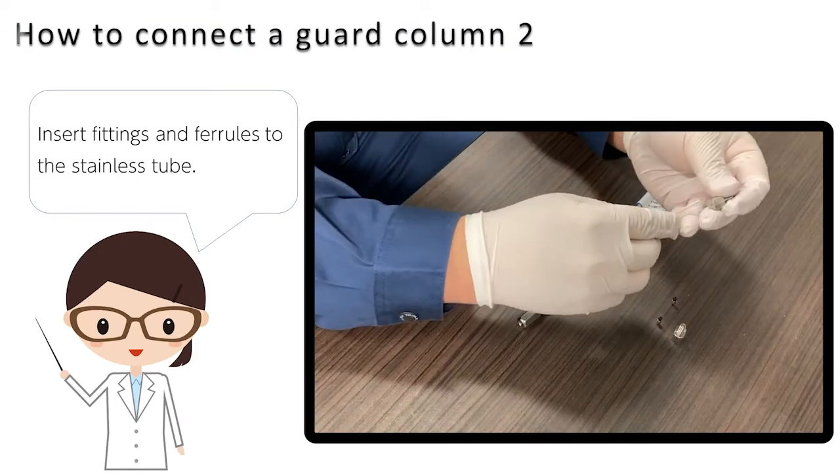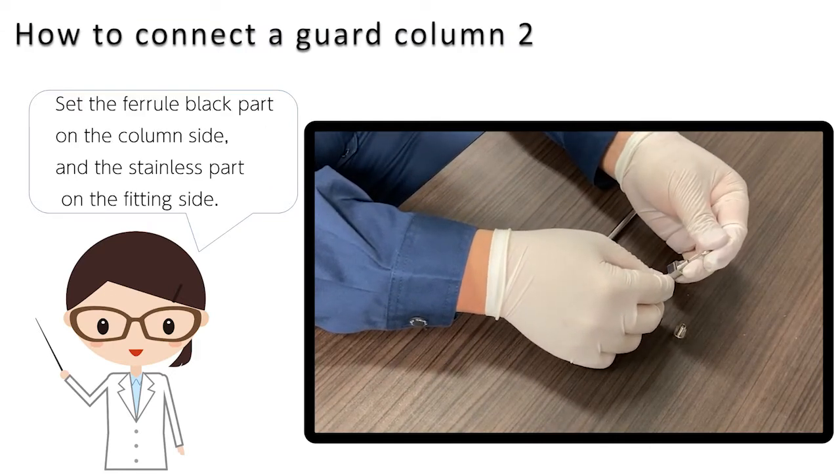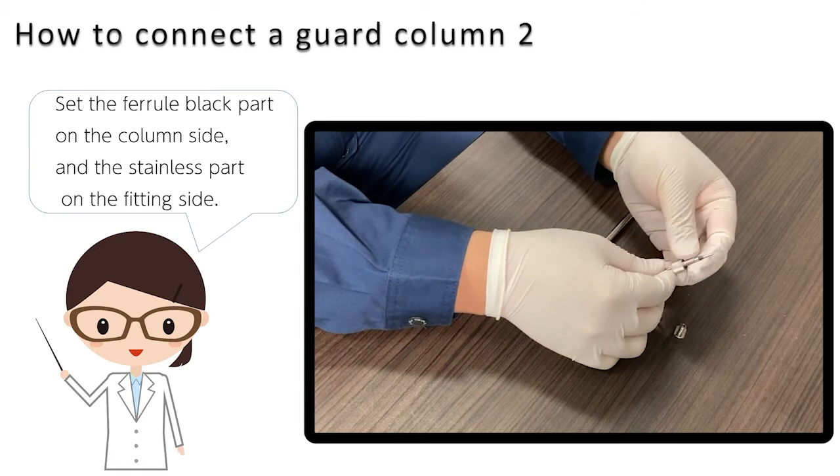Insert fittings and ferrules to the stainless tube. Set the ferrule black part on the column side and the stainless part on the fitting side.